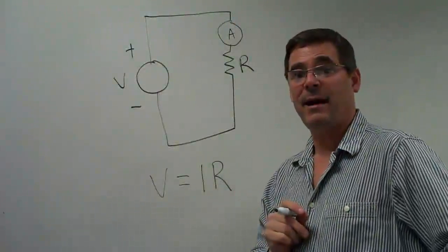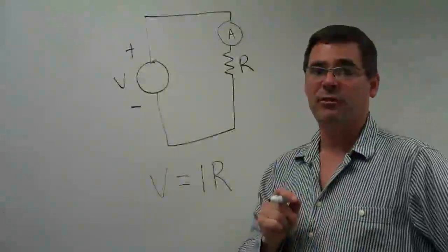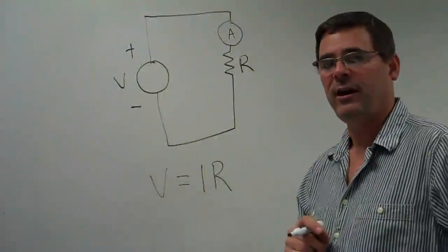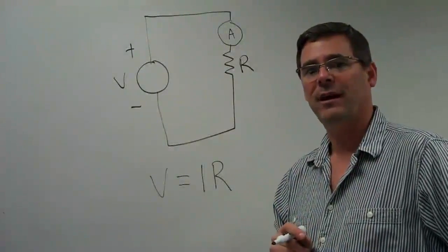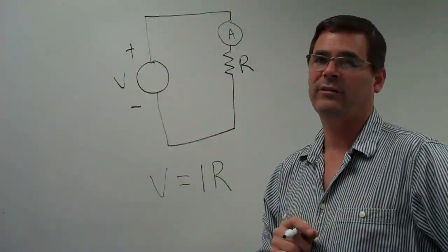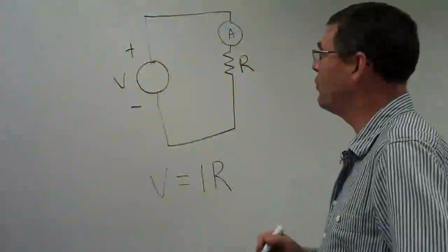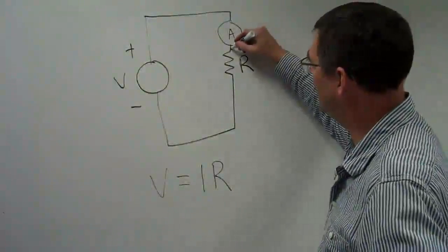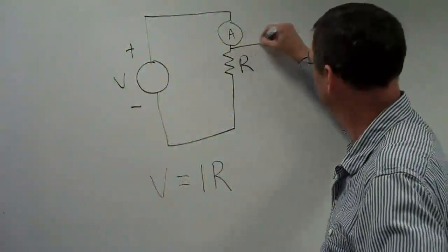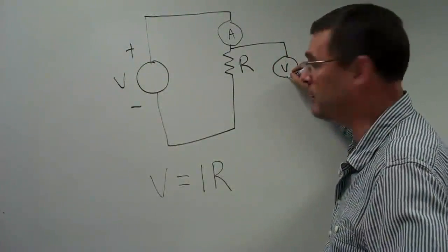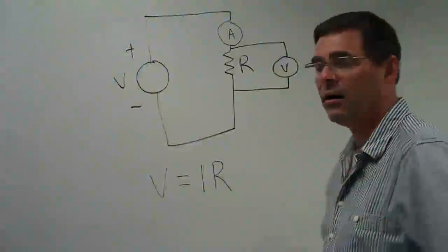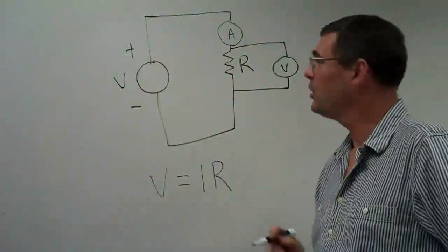That's what it looks like in a schematic diagram. To measure the voltage across the resistor, I need to place my voltmeter, the meter that measures volts, in parallel with my resistor. So one side of the voltmeter is connected to the other side of the resistor. So again,